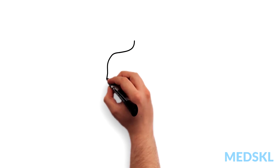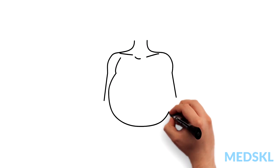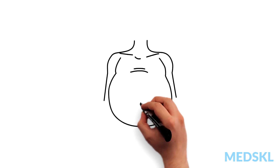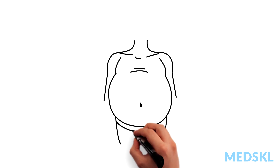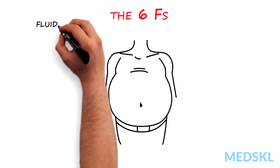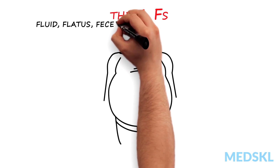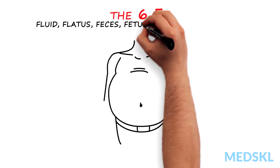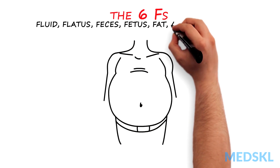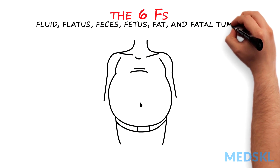We can generally approach the complaint of abdominal distension by considering the six Fs: fluid, flatus, feces, fetus, fat, and fatal tumor.